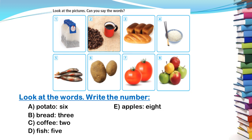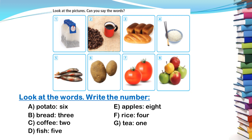E, apples. So we have apples — which number are they? They are at the end of these pictures, so it's number eight. F, rice, number four. G, tea. Pay attention please to your pronunciation. We say tea, number one. And the last picture is about tomatoes. So tomatoes are in number seven.